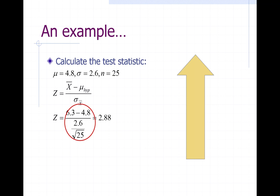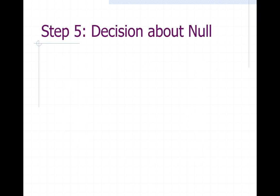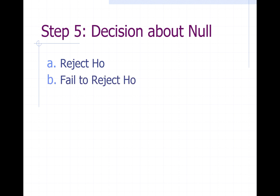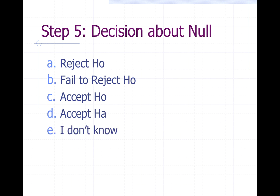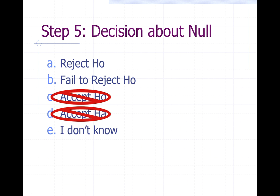We found our Z-statistic to be 2.88. Now we compare it to our rejection region. We never 'accept' anything — we only talk about the null, either rejecting it or failing to reject it, so the only valid answers for step 5 are reject H0 or fail to reject H0. Because 2.88 is larger than 1.65, which defines our rejection region, we reject H0.